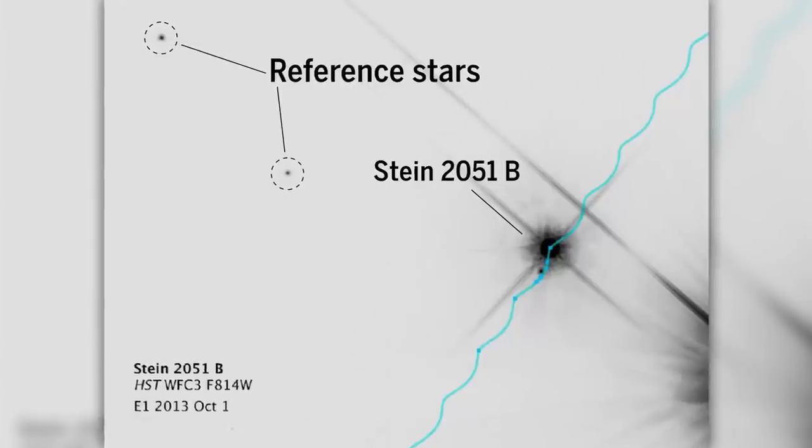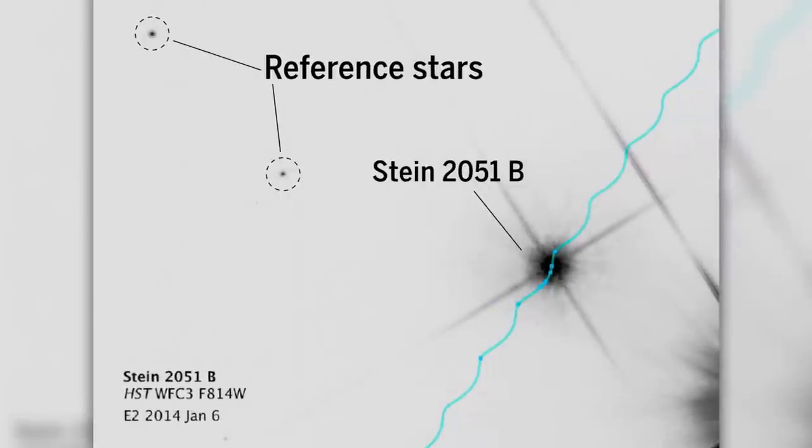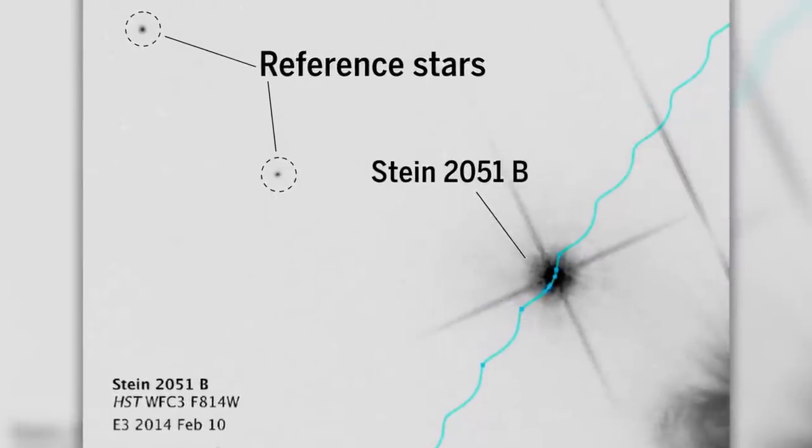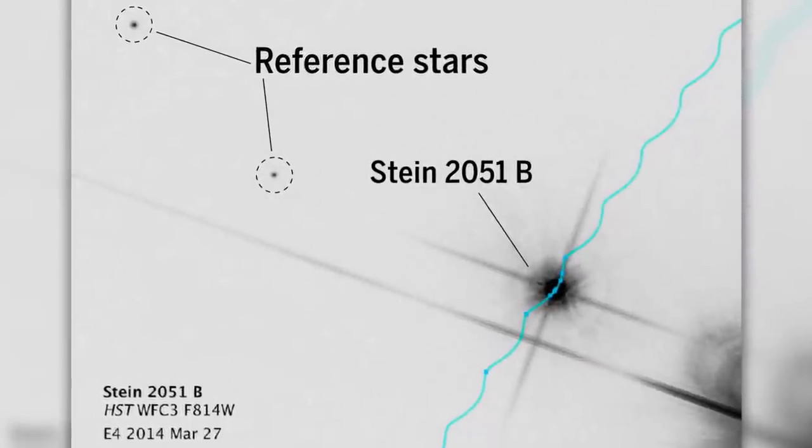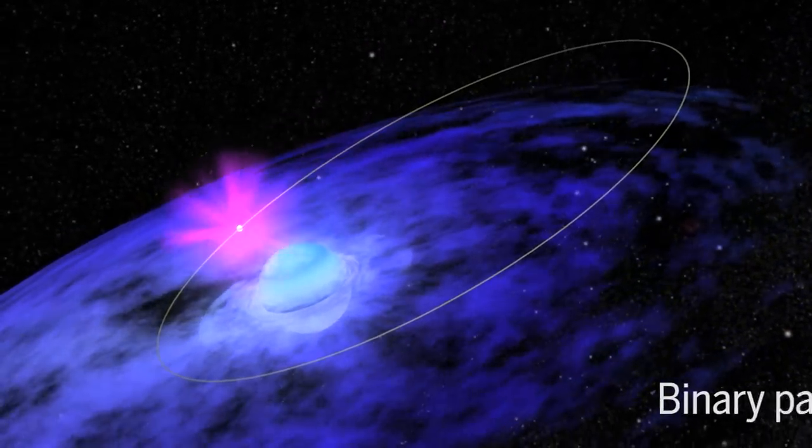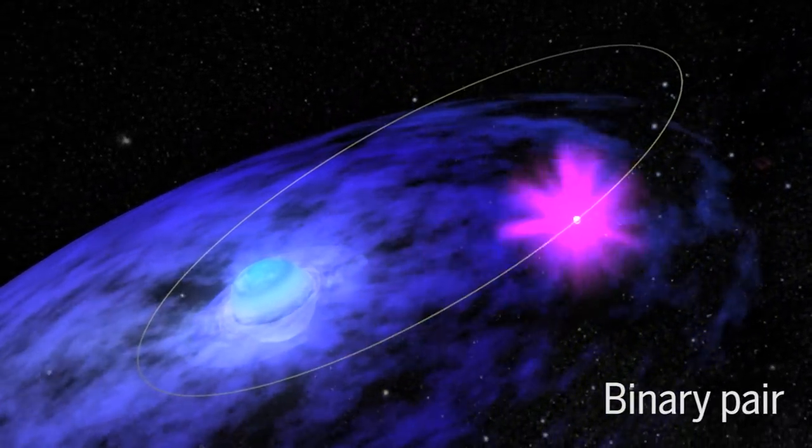Seeing such a shift would be very useful to astronomers because it would provide a way to directly measure the mass of the intervening star, something that is very hard to do unless a star is in a binary pair, when their orbits reveal their mass.